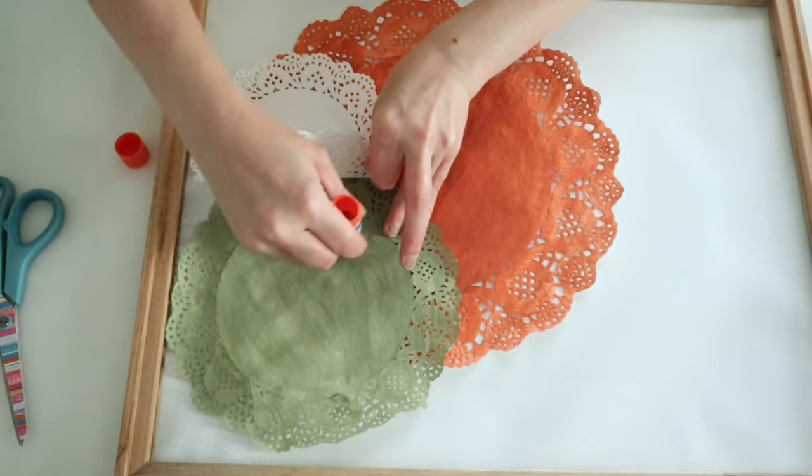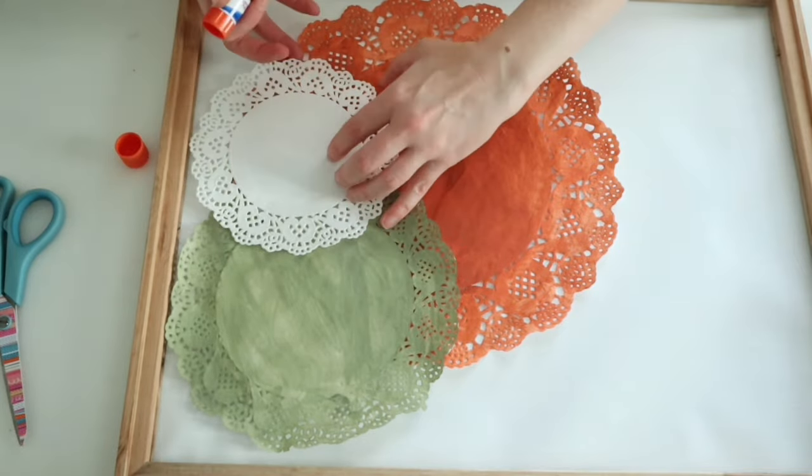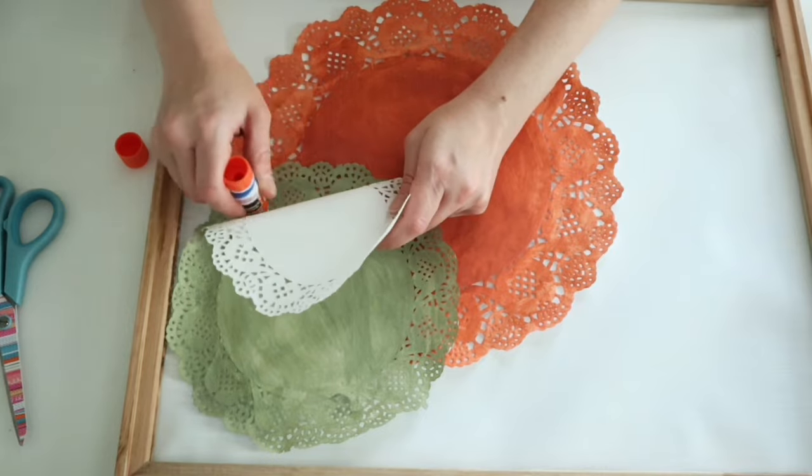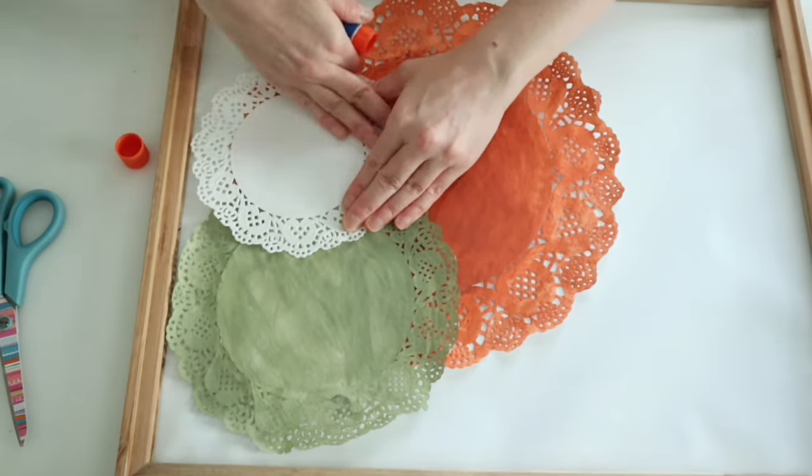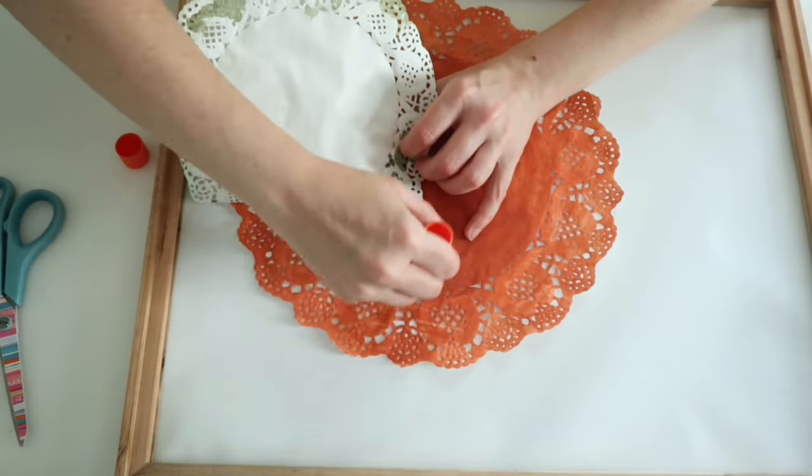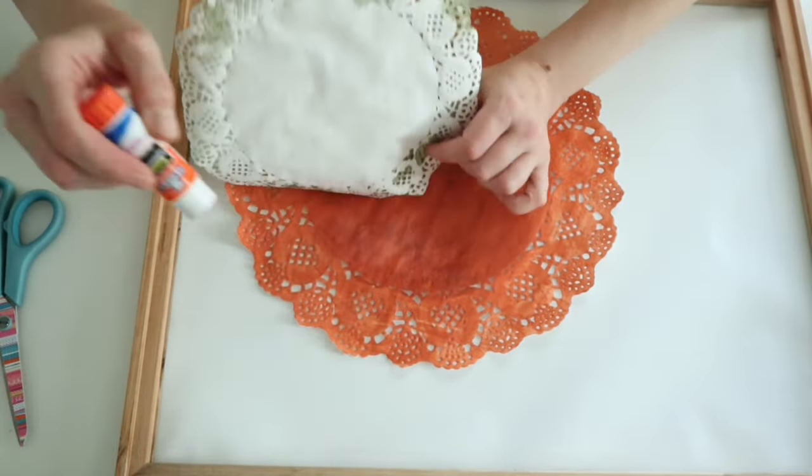Then all I had to do was just place them on my canvas where I wanted them. And I just used some of this glue stick glue from Dollar Tree to kind of place these where I wanted them. I glued them all together first and then put them onto the canvas.